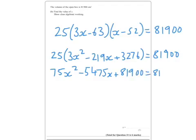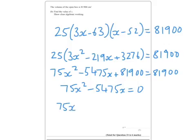equals 81900. So, therefore, what I end up with is 75x squared minus 5475x equals 0. And to solve that, OK, I'm going to factorise to get 75x times x minus 73. So, x is either 0, which it clearly isn't, or 73.